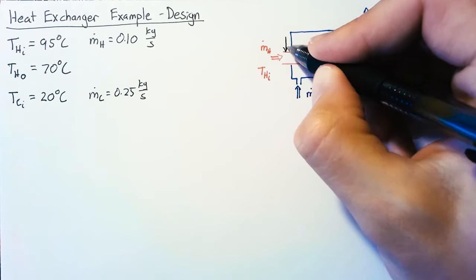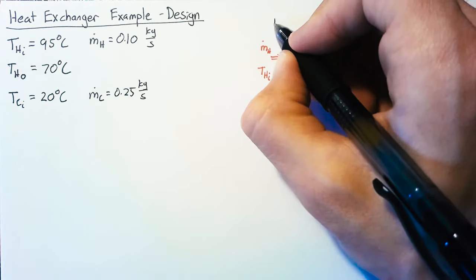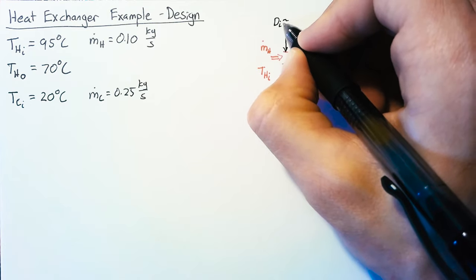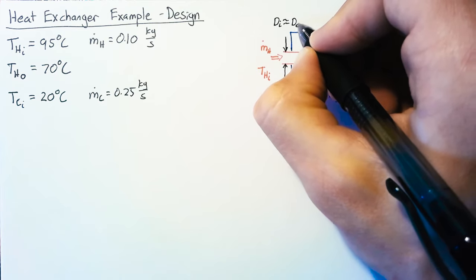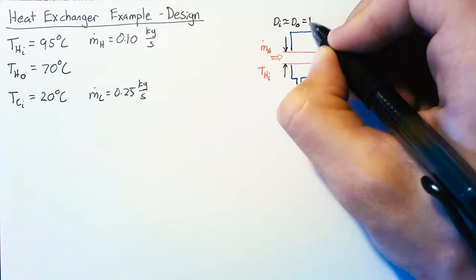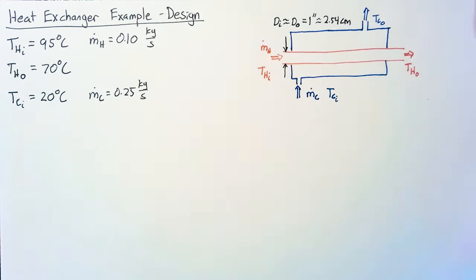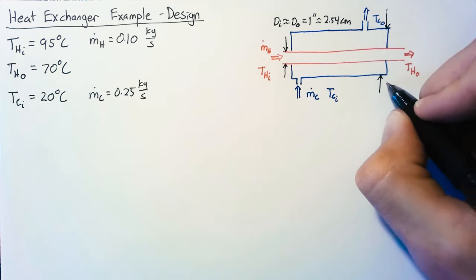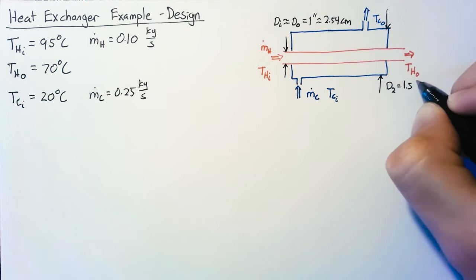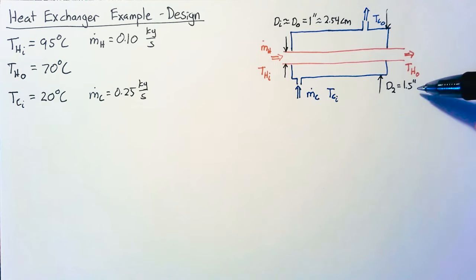We're going to choose the diameters of these pipes. The inner pipe is thin walled so we assume d_in is about the same as d_out with a diameter of one inch or 2.54 centimeters. Our outer pipe has a diameter of 1.5 inches. This doesn't play into our analysis today but I did use these values to calculate the heat transfer coefficients due to convection.